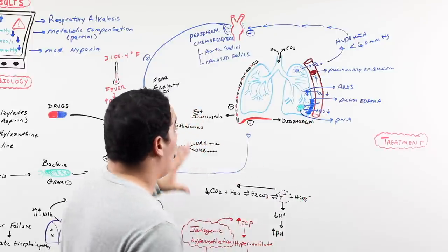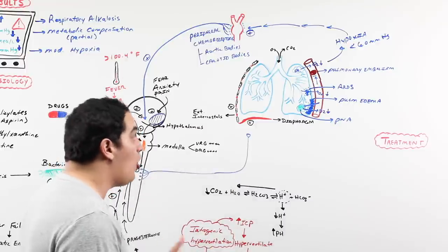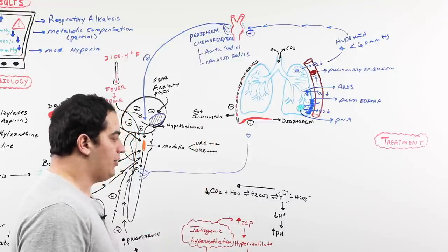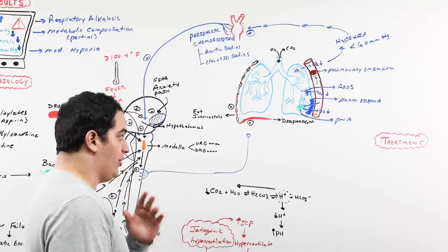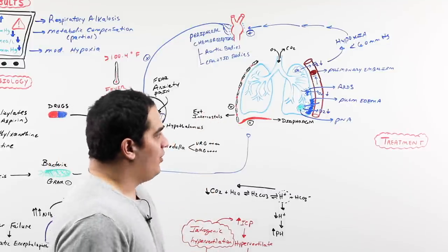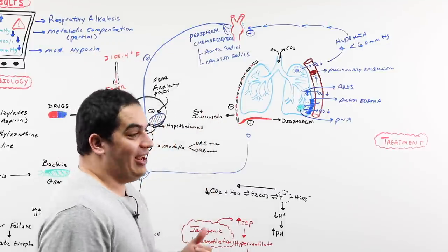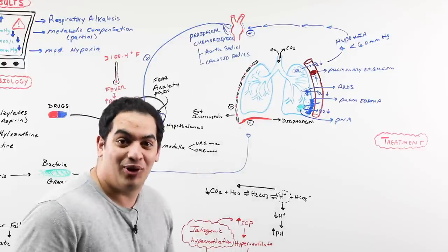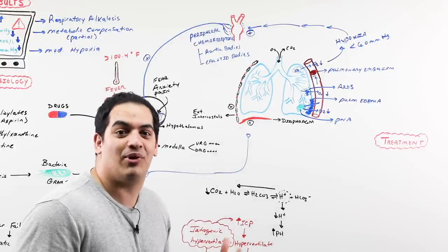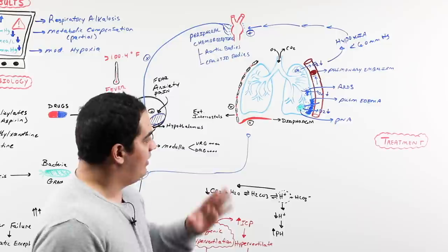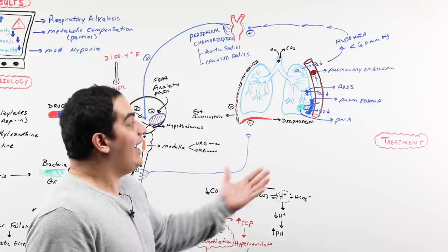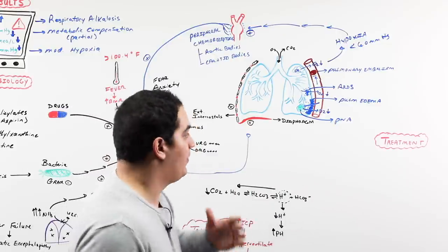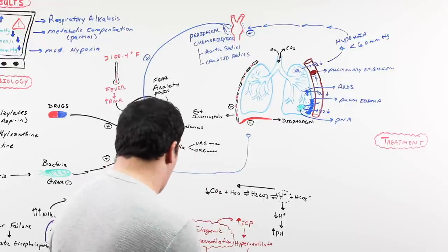This covers our pathophysiology and causes — truly understanding what respiratory alkalosis can be due to. How do we diagnose all of these? We utilize our ABG and the pathophysiological approach we just took to figure out what the problem is. Now I have to treat this person. How do I treat them?